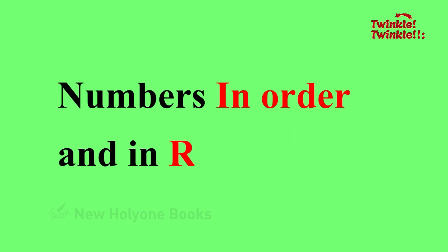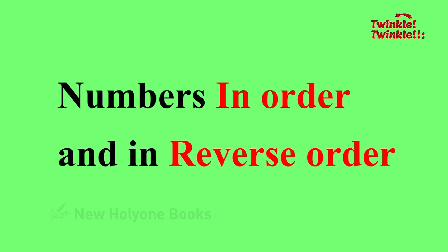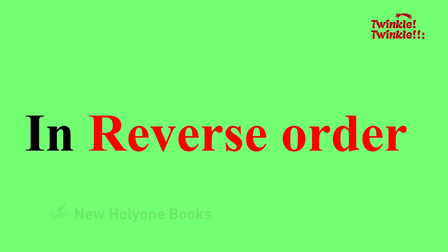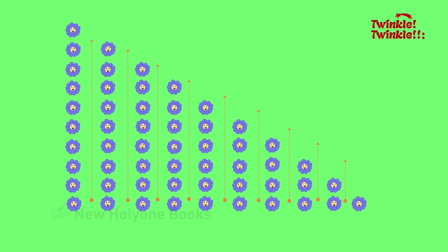Numbers in order and in reverse order. 1, 2, 3, 4, 5, 6, 7, 8, 9, 10. 10, 9, 8, 7, 6, 5, 4, 3, 2, 1.